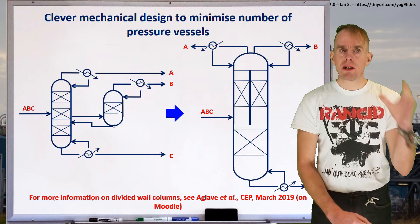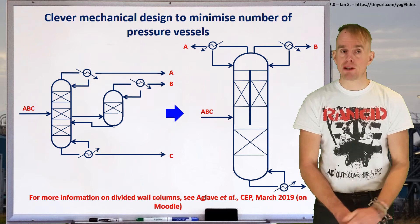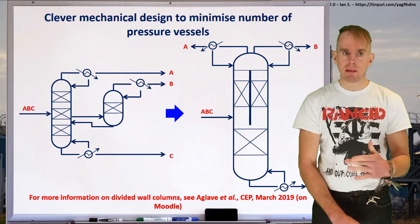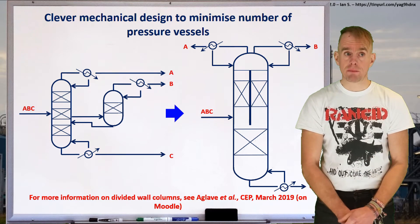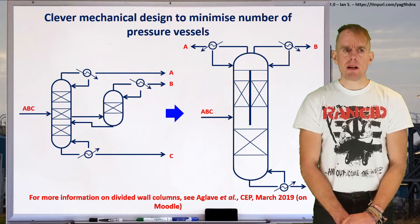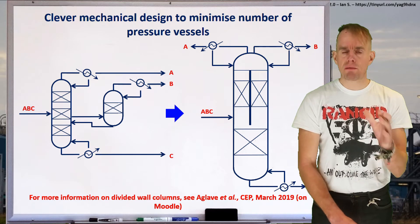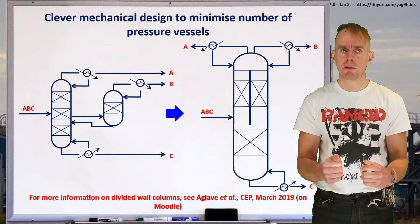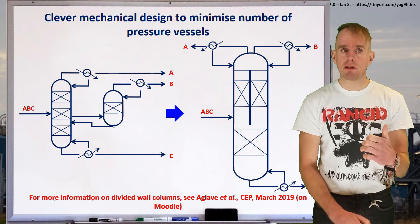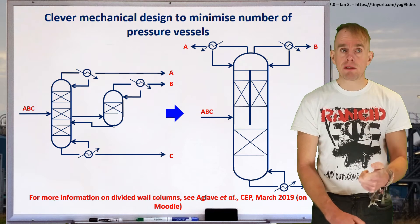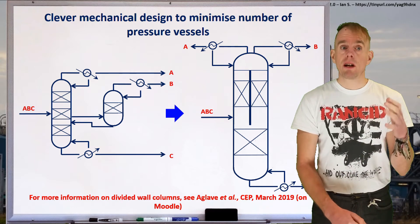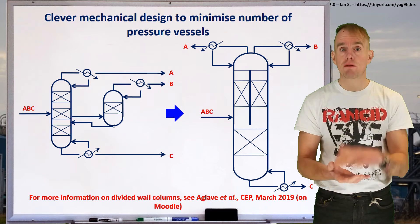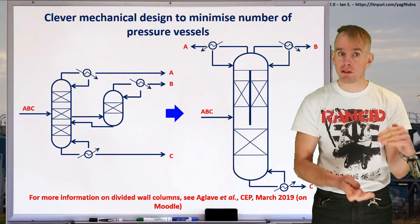Likewise, if we consider that part of the partially coupled sequence that separates off A from the mixture of A, B, and C, we're probably going to have more theoretical stages in order to do that. A, in this case, is our most volatile component. We've got our own heat exchanger associated with that — our own condenser. If we think about it, the side stripper for B and the side stripper for A could be considered to be the same thing: they've got their independent heat exchange equipment, a vapor flow upwards starting with A, B, and C. In the case of the side stripper we've got B as reflux, and in the case of the main column we've got A as reflux.